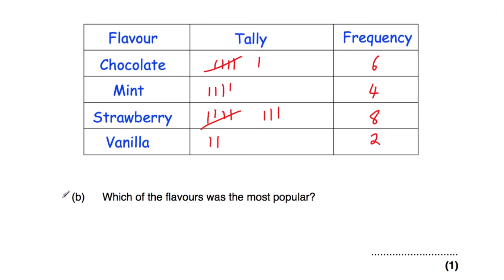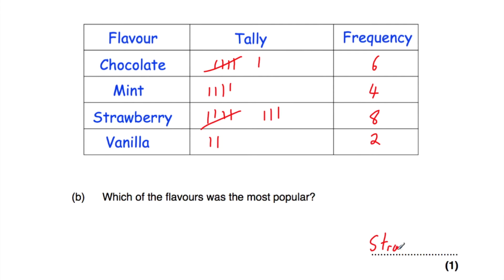Part B says which of the flavours was the most popular. We're looking for the one with the highest frequency. The frequencies are six, four, eight, and two. Eight is the highest, and that's strawberry. So strawberry was the most popular flavour.